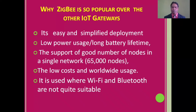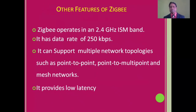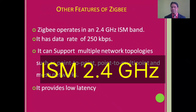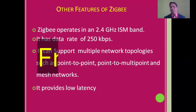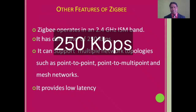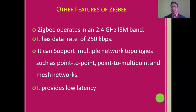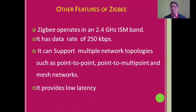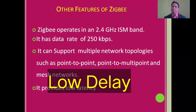Zigbee is becoming popular because it is a replacement for Wi-Fi and Bluetooth — where we can't use Wi-Fi and Bluetooth, we can use Zigbee. It operates in the 2.4 GHz ISM (Industrial, Scientific, Medical) band, which is an unlicensed or free band, keeping costs low. It has a data rate of 250 kbps, which is sufficient for a single Zigbee node since it only needs to transmit small chunks of data. It supports multiple network topologies such as point-to-point, point-to-multipoint, and mesh networks. It also features low latency, meaning data sent by sensors is received in a timely manner.